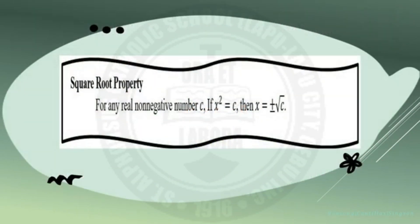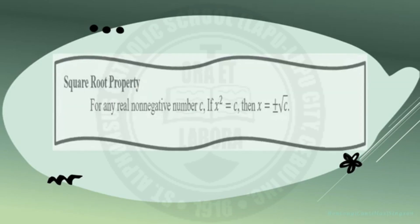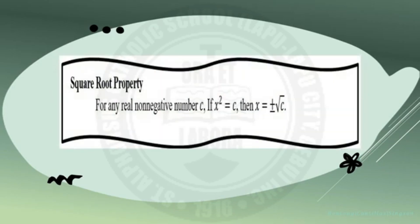In solving a quadratic equation by extraction of square root, you are going to use the square root property. The square root property states that for any real non-negative number c, if x squared equals c, then x would be equal to positive or negative square root of c.